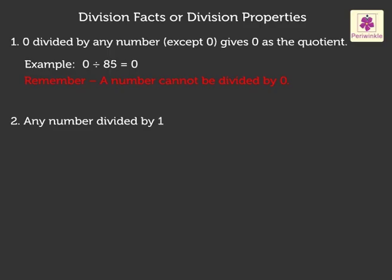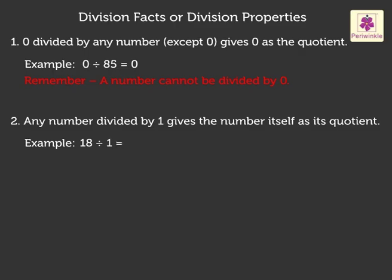Second, any number divided by 1 gives the number itself as its quotient. For example, 18 divided by 1 is equal to 18.